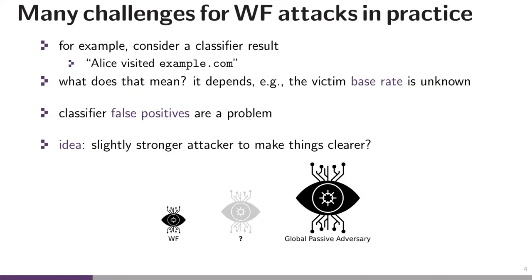We have studied website fingerprinting attacks in the literature for about 10 years or so, and there are many challenges for an attacker in practice. For example, imagine a website fingerprinting classifier tells an attacker that Alice, the particular user being monitored, visited example.com. What does this really mean — can the attacker really trust this classification? The answer is that it depends on many things, among others what's called the base rate: how often is Alice really visiting example.com? Maybe she's simply not interested in this kind of website at all and would never visit it.